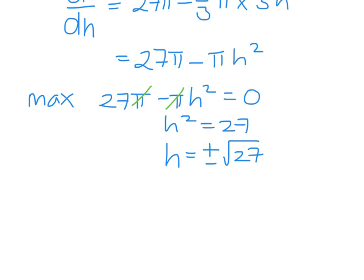It only makes sense if the height is a positive, so the height would be the square root of 27, and 27 is 9 times 3, so that is 3 root 3.